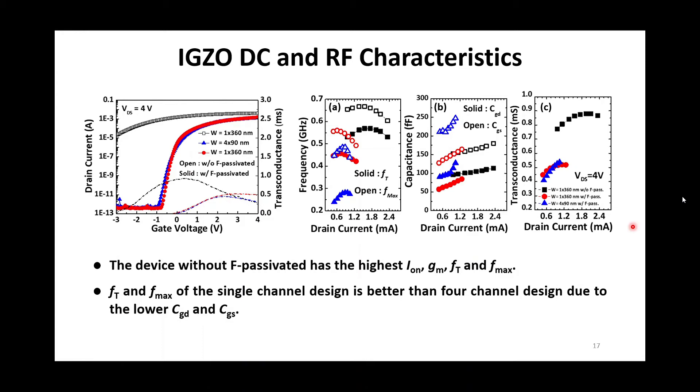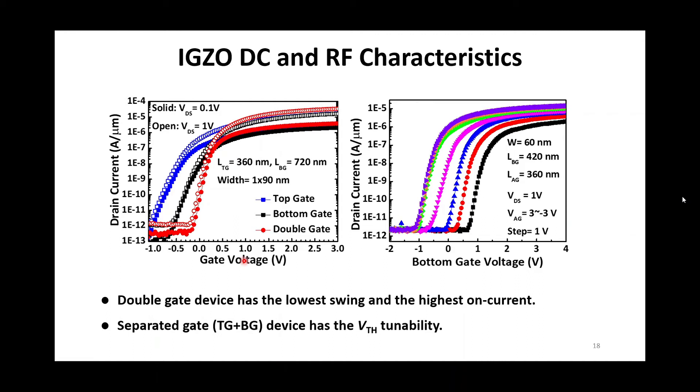We measure the ID-VG curve of IGZO devices with different gate structures. The double-gate device has the lowest swing and the highest on current, due to the surface carrier scattering reduction. However, even if the single-gate devices have the poorer performance, they perform the threshold voltage tunability by applying a voltage on another gate.